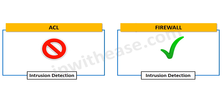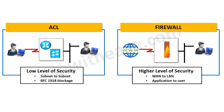Intrusion detection is an important security feature responsible for monitoring a network or systems for malicious activity or policy violations, and alerting in order to control malicious traffic attacks on the system. ACLs don't have the capability of intrusion detection. However, next-generation firewalls function with intrusion detection.